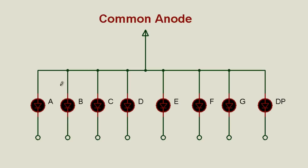7-segment displays are available in two configurations: common anode and common cathode. In the common anode configuration, all the anodes of the internal LEDs are grouped together and connected to the positive supply, and the individual cathodes are connected to the individual pins of the microcontroller.